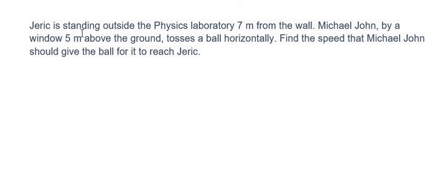Jeric is standing outside the physics laboratory 7 meters from the wall. Michael John, by a window 5 meters above the ground, tosses a ball horizontally. Find the speed that Michael John should give the ball for it to reach Jeric.